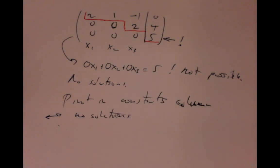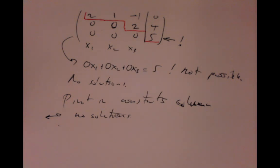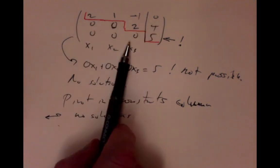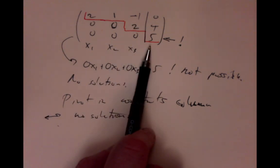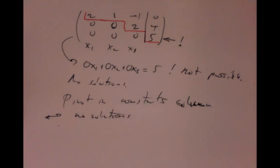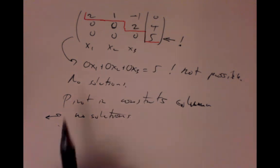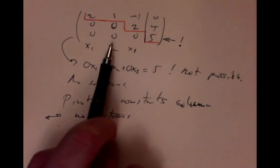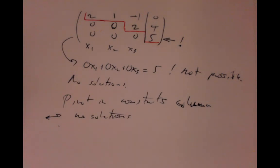In the next lecture, we'll look at the problem of trying to organize this into a systematic calculation. So far we have the rough idea that once we can see the row echelon form, we can see whether or not there are solutions and how many there are. But we don't know the fast, quick way to organize getting an arbitrary augmented matrix into row echelon form. We'll be able to use that to rapidly calculate with large systems of linear equations.